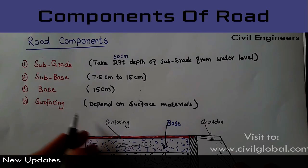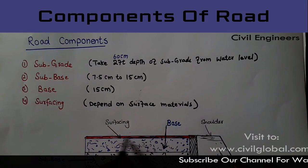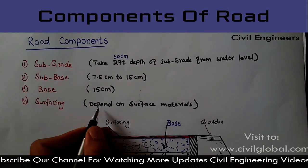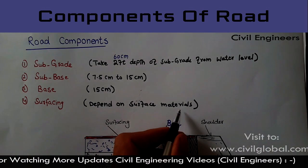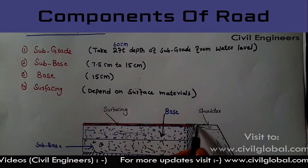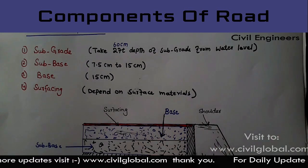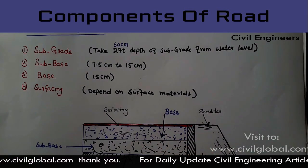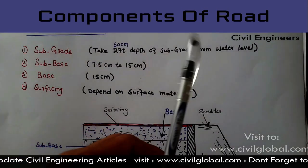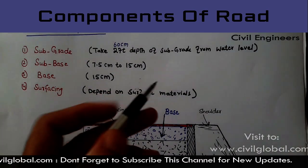The surfacing, also called topping, depends on the surface material. In this section, this is the shoulder for the road, and this is the curb. So this is the short topic for today: components of road.